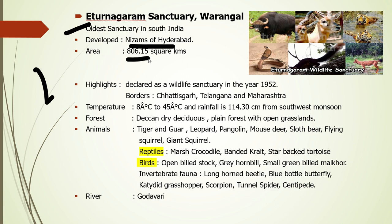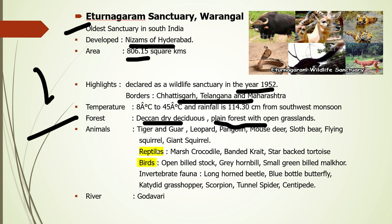Eturnagaram was declared a wildlife sanctuary in 1952. For exams, a geographical question that may be asked is about which borders it shares — the answer is Chhattisgarh, Telangana, and Maharashtra states. The forest type is Deccan dry deciduous plain forest with open grasslands. Tiger and gaur are the main indicator species; other animals include leopard, pangolin, and others. The Godavari River flows through it, which is very important.